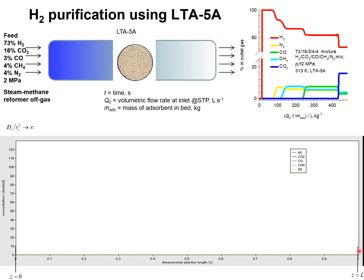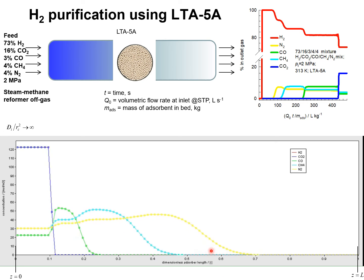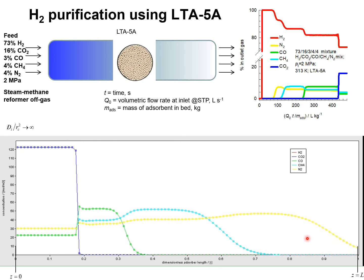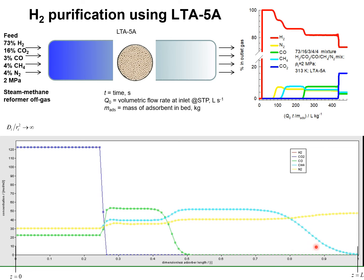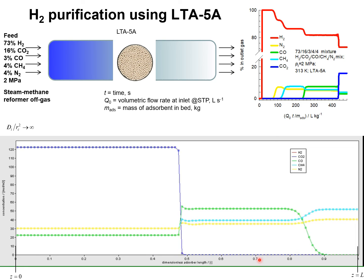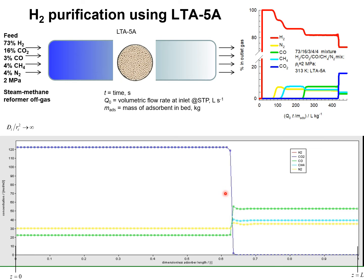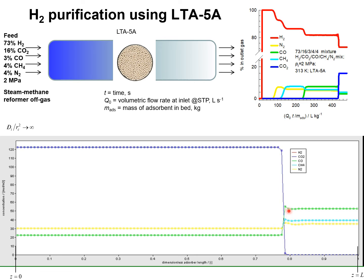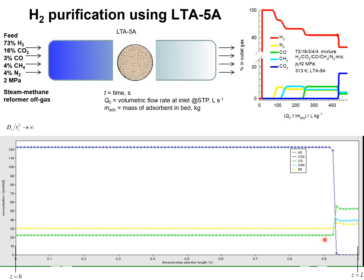Let's have a look at the animation. Hydrogen is the first component to break through, shown in red. Nitrogen, shown in yellow, is the second component to break through. Then we have methane, carbon monoxide, and the front of the most strongly adsorbed CO₂ moves very slowly through the bed from the inlet to the outlet before it elutes completely.